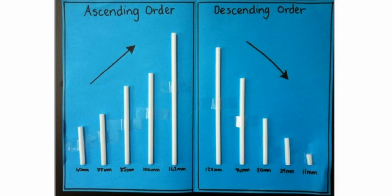Ascending में सबसे छोटी से शुरू होकर सबसे बड़ी तक जाते हैं, और descending में जो सबसे बड़ा number होगा उसको हम पहले रखेंगे और उसके बाद छोटे numbers को follow करेंगे। For example, अगर आपके पास sequence दी जाती है 10, 9, 8, 7 — तो यह descending है, और इसका reverse आपका ascending कहलाता है।